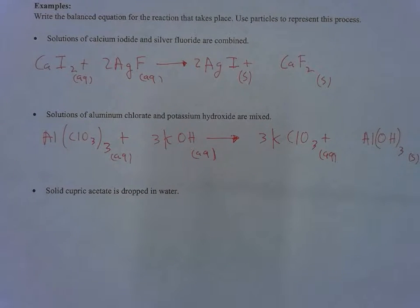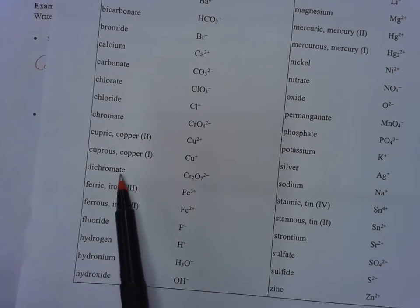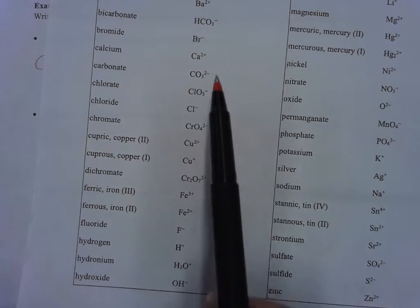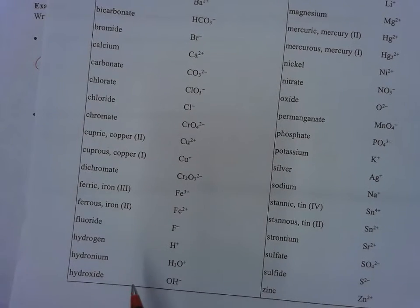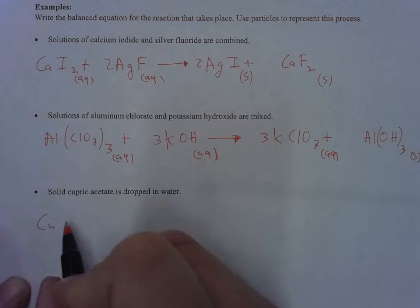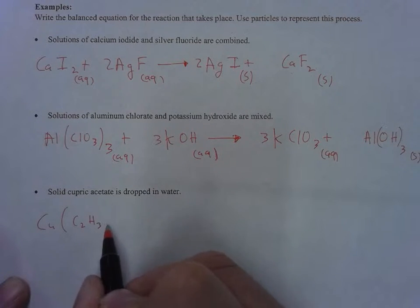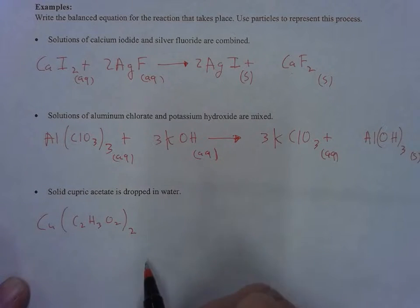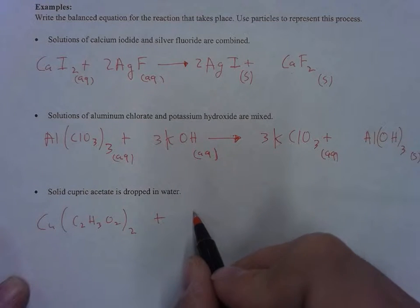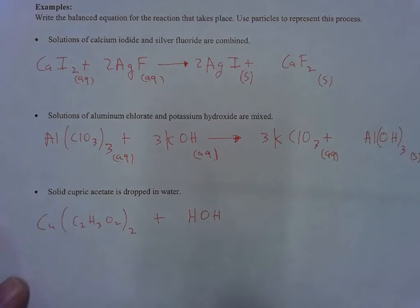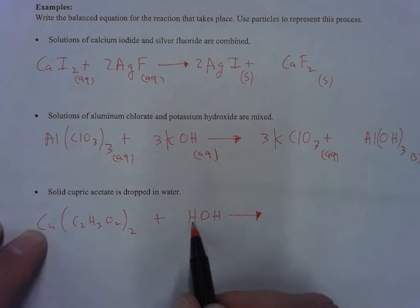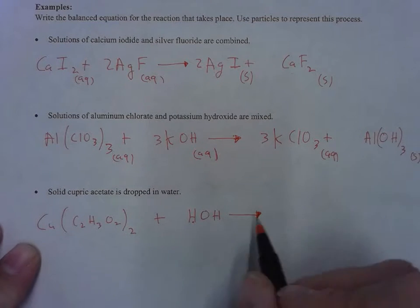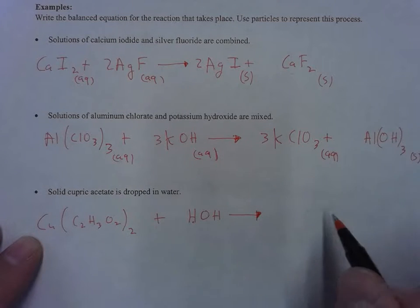Next up: solid cupric acetate is dropped in water. Cupric is copper two, and acetate has a minus one, C2H3O2. So we need two acetates to cancel out the plus two charge of copper two: Cu(C2H3O2)2 as a solid. It's dropped in water. I'm going to write water as HOH—you're going to see why in a second. When I switch out, I can switch this H and the copper more easily. You can write it as H2O but it's more helpful to think about it as HOH.